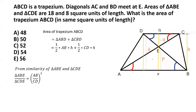In similar triangles, the ratio of corresponding sides also equals the ratio of their altitudes, so AB/CD equals p/q, making the area ratio equal to (p/q) squared. Since the area of triangle ABE is 18 and the area of triangle CDE is 8, the ratio is 18/8, which simplifies to 9/4. Taking the square root, p/q equals 3/2.